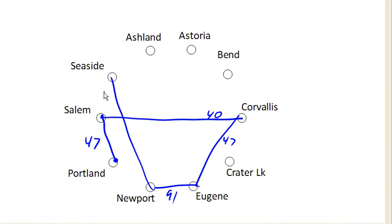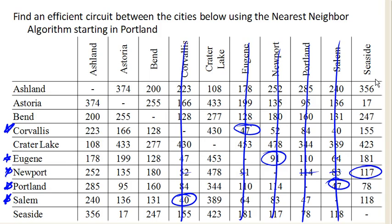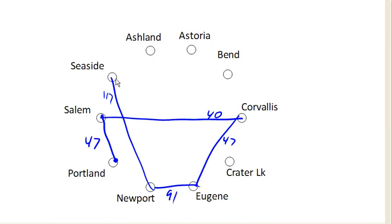Seaside is now visited and I'm in Seaside. From Seaside, I'm going to Astoria — Astoria is close, only 17 miles away. So from Seaside, I'm going to go to Astoria, which is only 17 miles away.